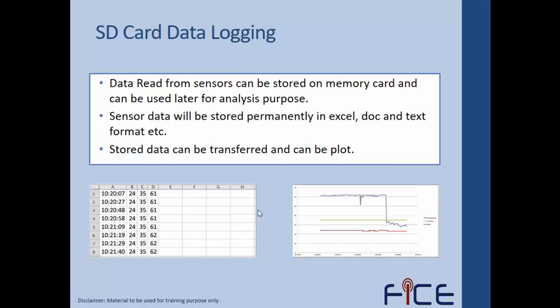Data read from sensors can be stored on a memory card and used later for analysis. The sensor data can be stored permanently in CSV, Excel, doc, or text format. That stored data can then be transferred and plotted using Excel or other data analysis tools.